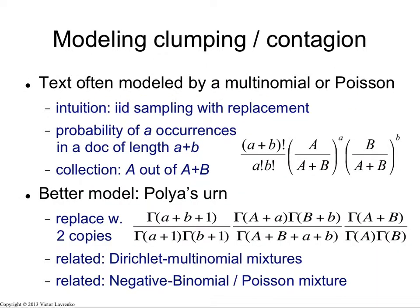If you're modeling words, what this means is you cannot model text effectively by a multinomial or a Poisson distribution. Those distributions are appropriate when you have sampling with replacement — words sampled independently of each other and also independently of previous occurrences of themselves. A multinomial and a Poisson are very common models of word frequencies, and we'll see them later in the course used in probabilistic models of retrieval. But these models don't respect the clumping nature of word occurrences, and we'll see how researchers have tried to tweak those models to be aware of the clumping.